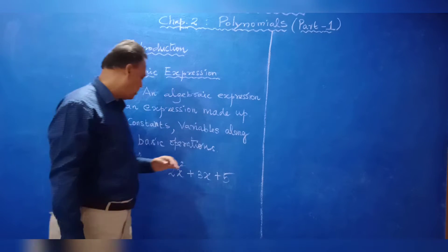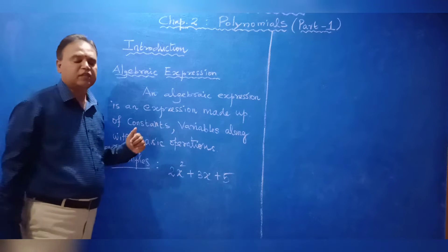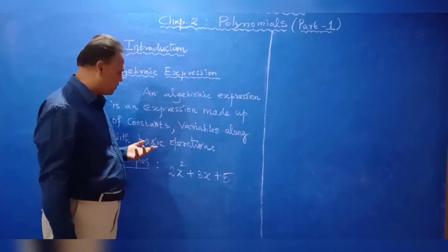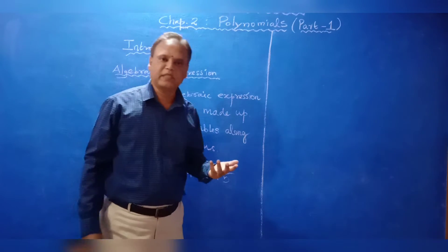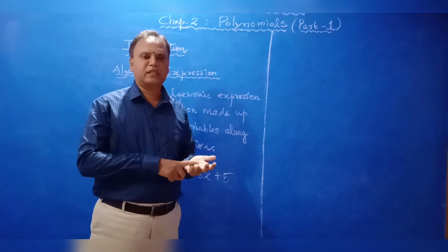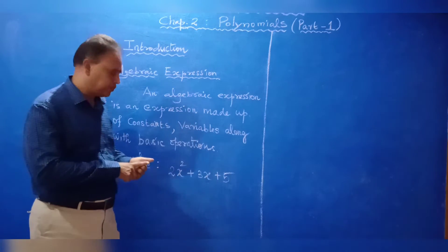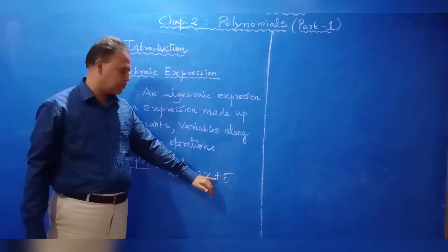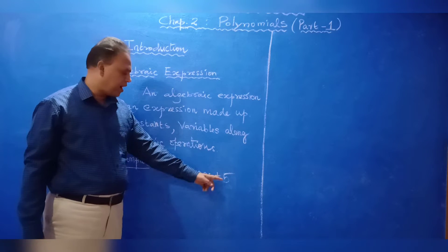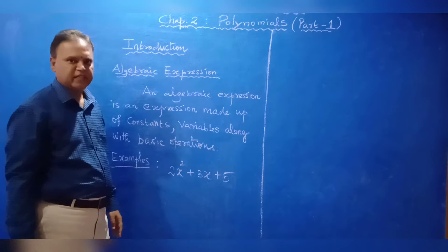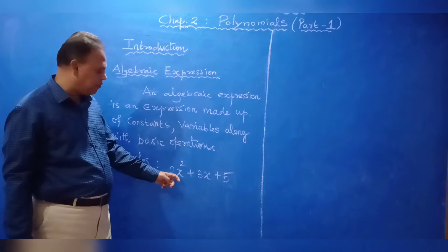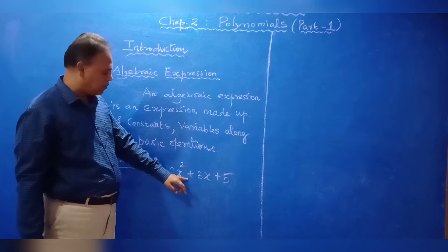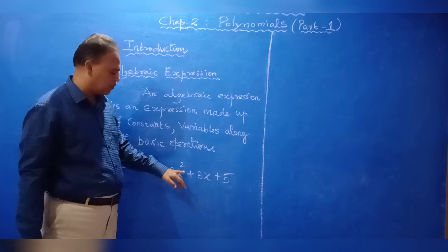Along with basic operations — what are the basic mathematical operations? Plus, minus, multiply, divide. For example, consider 2X squared plus 3X plus 5. Here 5 is constant, X is the variable, and the plus symbol is the mathematical or basic operation.